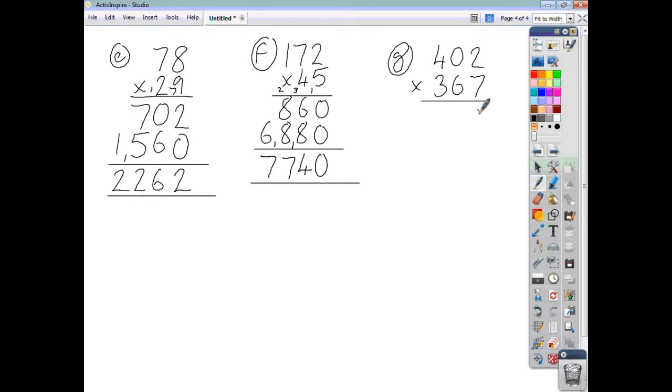And as for this one, 7 twos, 14. 7 zeros are 0. Add the 1 is 1. 7 fours, we get 28. 6 represents 60. So we add a 0. 6 twos, 12. 6 zeros are 0. Add the 1, 1. 6 fours, 24. Now the 3 represents 300. So we'll add 2 zeros. And then 3 twos are 6. 3 zeros are 0. 3 fours are 12.